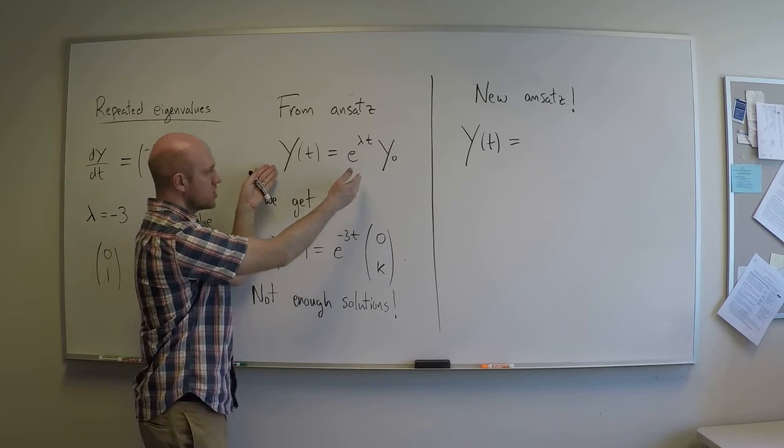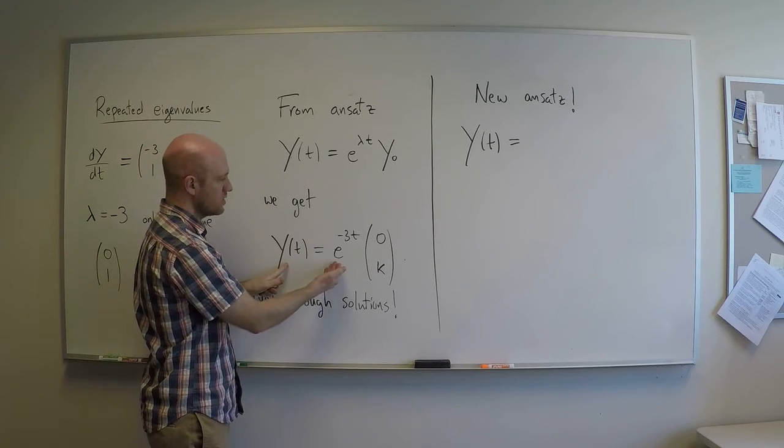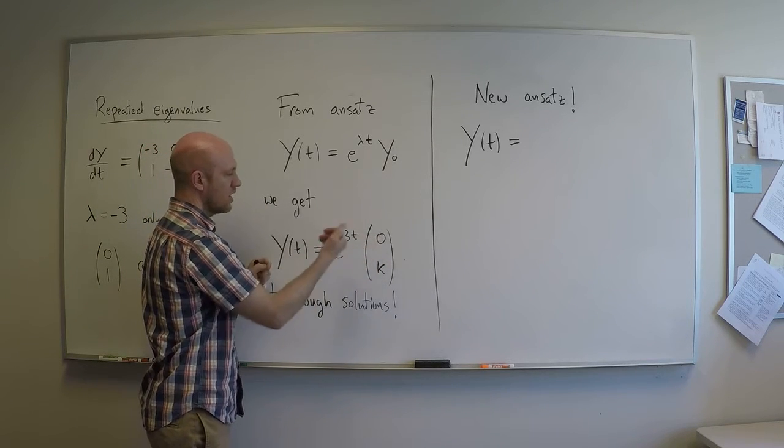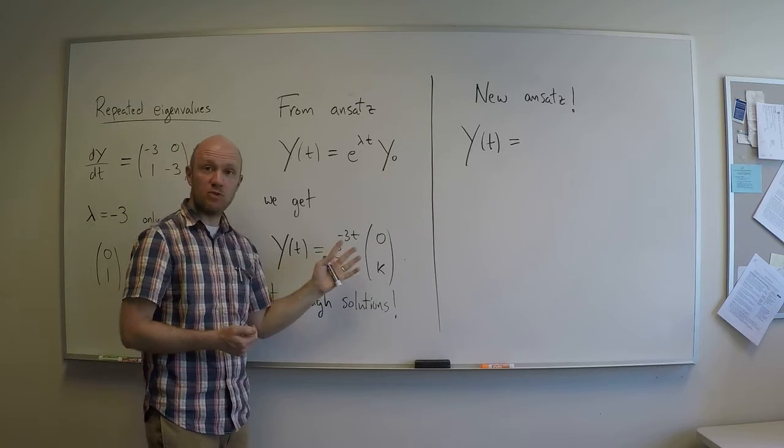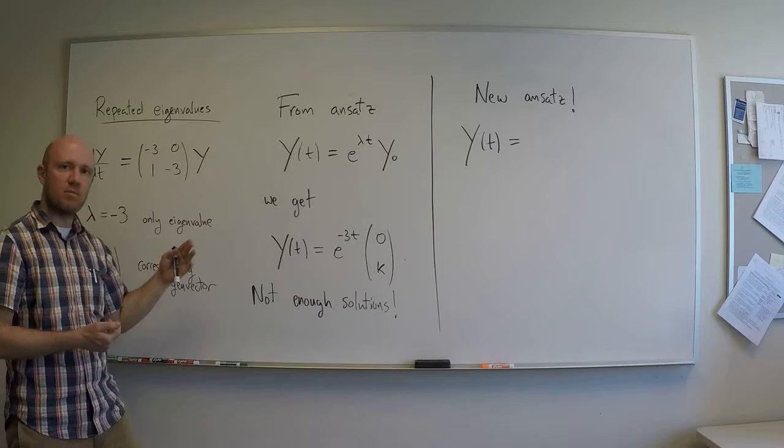And using that information, we can take the eigenvalue, eigenvector, plug them in, and we get y(t) = e^(-3t)(0, k). This is a beautiful solution, or a set of solutions, a whole line of solutions to this equation, but it's not enough.